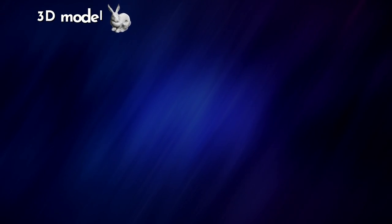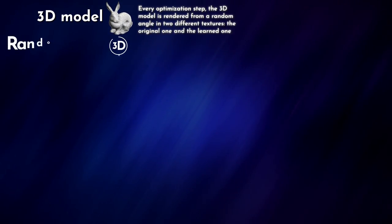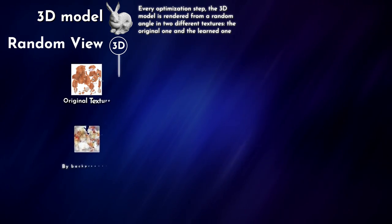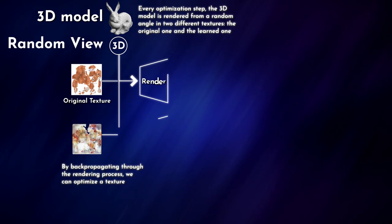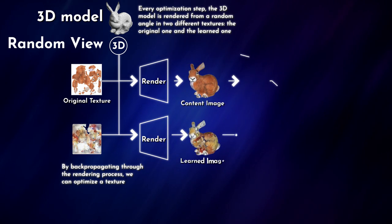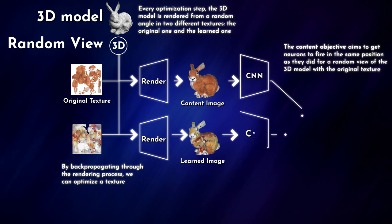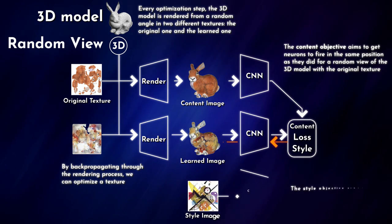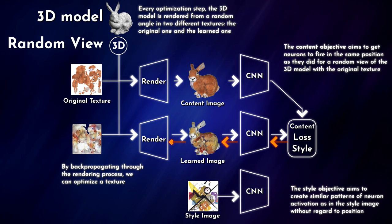How it does this is by using a convolutional network to extract both the style and the content into separate representations. The style represents the textures and colors, whereas the content is the 3D coordinate collection. And through the optimization process at every step, an output 3D model is rendered from a random angle from two different locations, the original one and the learned one.